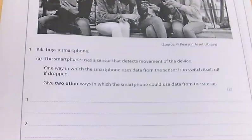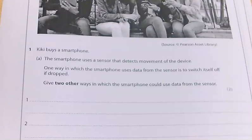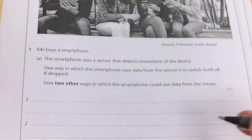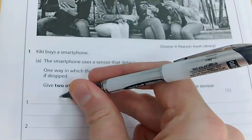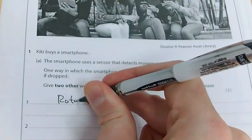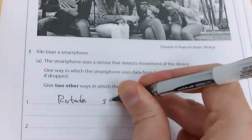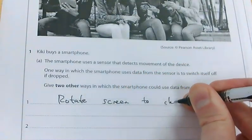The question says Kiki buys a smartphone. Question 1A: the smartphone uses a sensor that detects the movement of the device. One way in which a smartphone uses data from the sensor is to switch itself off if it is dropped. There are two other ways in which a smartphone could use data from the sensor. What we're looking at here is your smartphone and the sensors in it — you can have a load of different answers, such as rotating the screen to change the view.